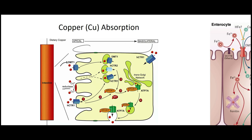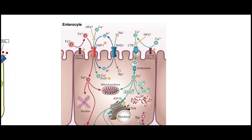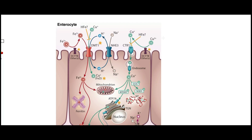This figure shows a reductase — this is from an older paper so they hadn't identified it yet — but it ends up being duodenal cytochrome B, as well as other reduction proteins. This is going from copper 2+ to copper 1+.